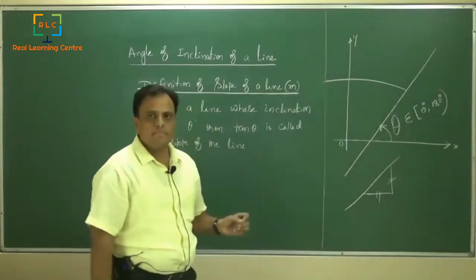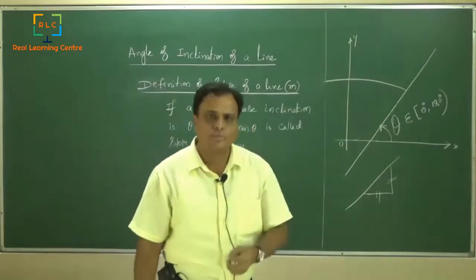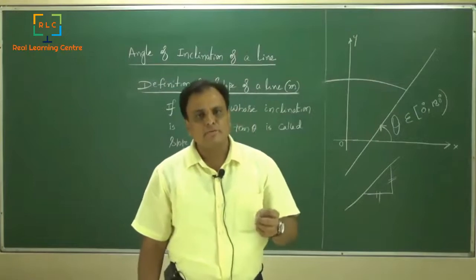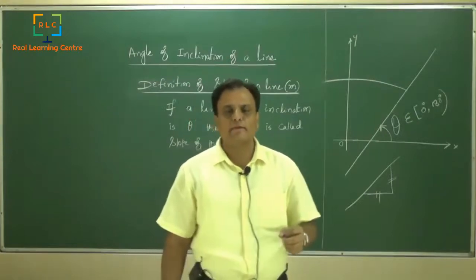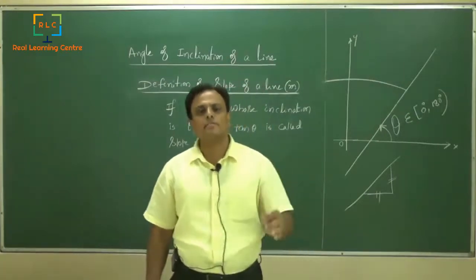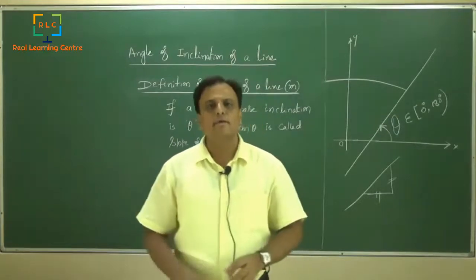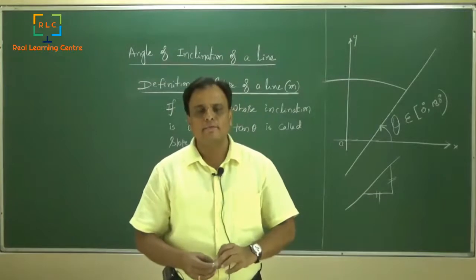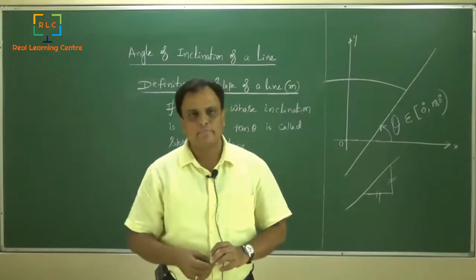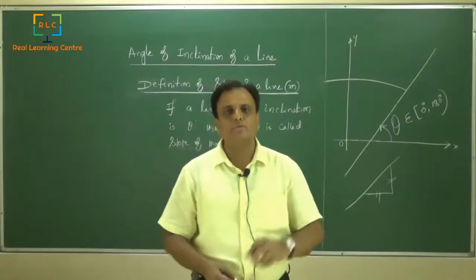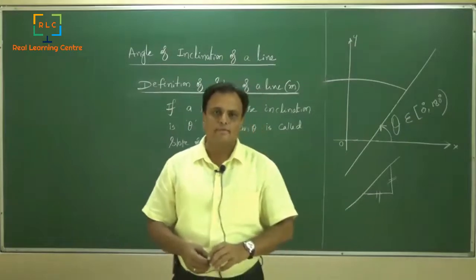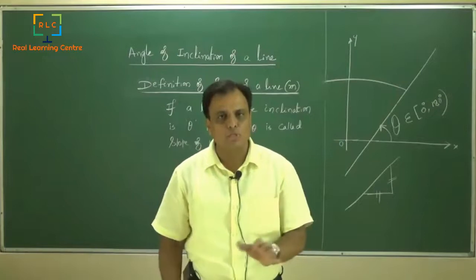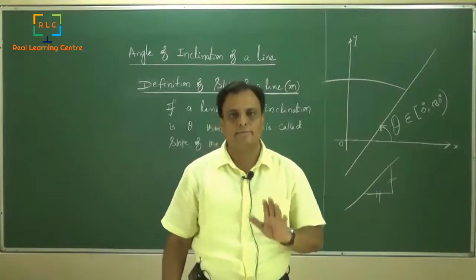Let me preview the concepts discussed so far. First, angle of inclination of a line: a line makes an angle theta with the positive x-axis, measured in positive direction, lying in the interval 0 to 180 degrees — this is called the inclination of the line. If you know the inclination, then the tangent of the inclination gives the slope of the line, also called the gradient.